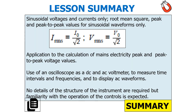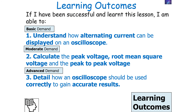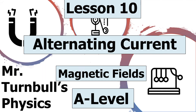So what have we learned in today's lesson? Sinusoidal voltages and currents can have a root mean square, a peak-to-peak, and a peak value for sinusoidal waveforms only. We know I_rms = I₀ / √2 and V_rms = V₀ / √2. We can apply these to calculations of mains electricity peak and peak-to-peak voltage values, and use an oscilloscope as a DC and AC voltmeter to measure time intervals, frequencies, and display AC waveforms. No details of the oscilloscope's internal structure are required, but familiarity with the operation of the controls is expected. Thank you for listening and have a lovely day.